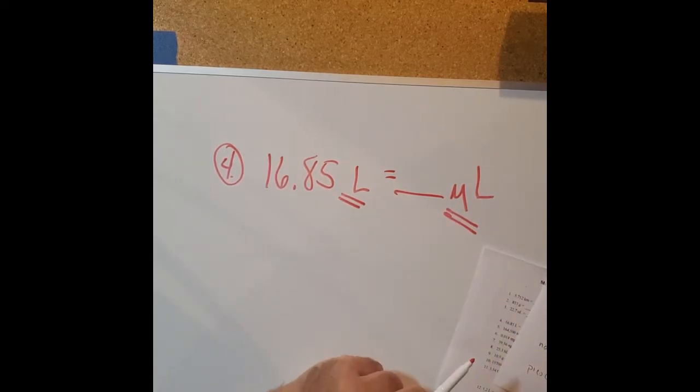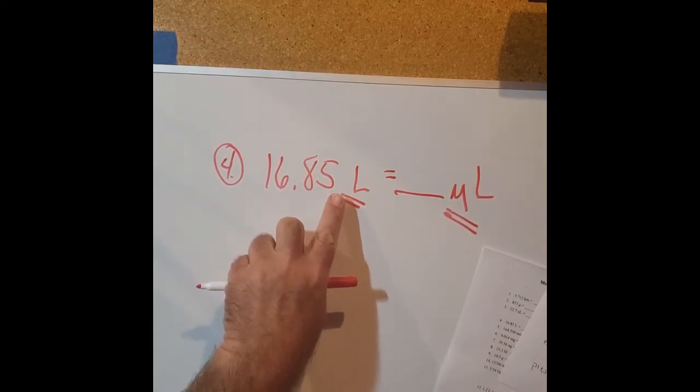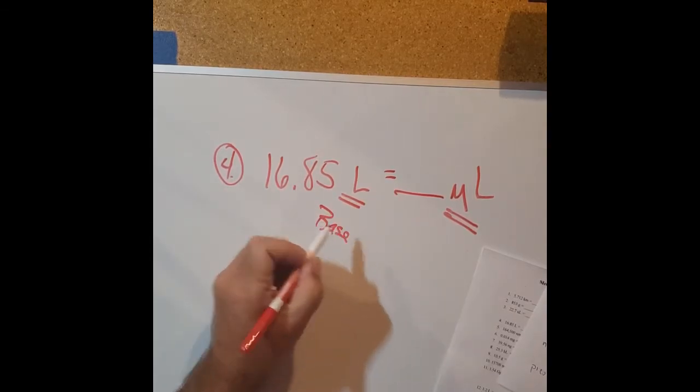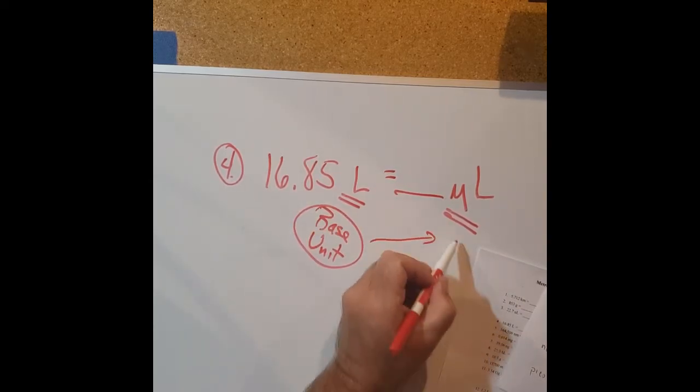What we want to do is just take note of the prefixes that are involved in this conversion. We start at liters, no prefix, so this is the base unit. And we're converting over to micro.